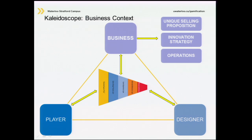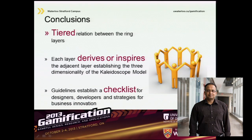From the business point of view, you've got to ask the bigger picture. Before you design any application, you've got to define your unique selling proposition. That's why the kaleidoscope model — seen here as a side view of our design — exists at the intersection of business, player, and designer. This allows us to define the USP for your business enterprise, define the innovation strategy, and define the operations plan. Once you define this, you can invest time and money into creating the game elements and engagement framework.